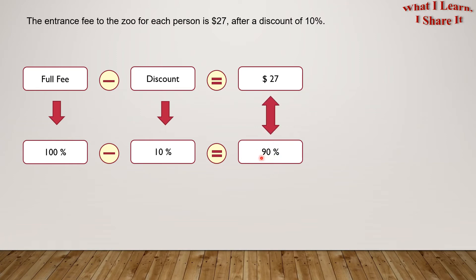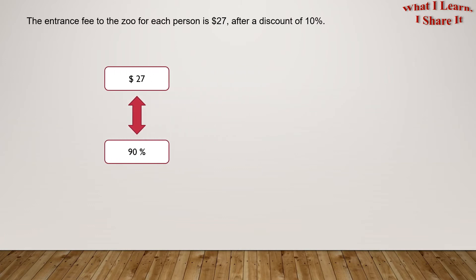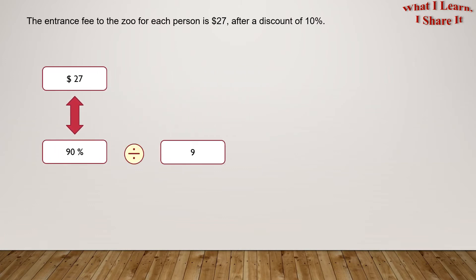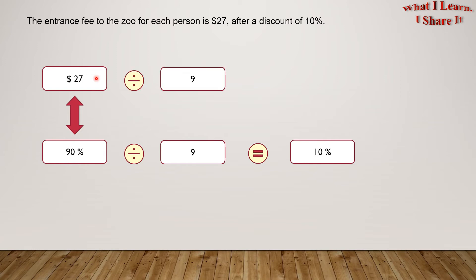This means $27 makes up 90% of the entire full fee. So if we divide 90% by 9, we will get 10%. That's what we need as per the question. But for doing that, we will also have to divide 27. So 27 divided by 9 is $3. This means $3 makes up 10% of the full fee.